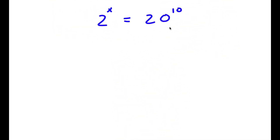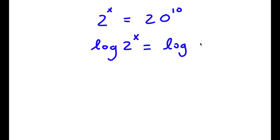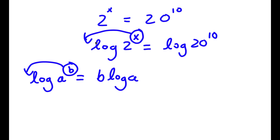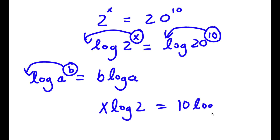Alright, so I have 2 to the power of x is equal to 20 to the power of 10. The first thing I'm going to do is take the log on both sides. So now I have log of 2 to the power of x is equal to log of 20 to the power of 10. An important property of logarithms is that if I have log a to the power of b, I can move the exponent b to the front. So I have x times log 2 is equal to 10 times log 20.